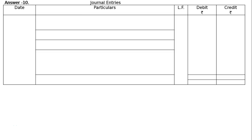Lal and Pal were partners in a firm sharing profits in the ratio of 3:7. On 1st April 2017, their firm was dissolved after transferring assets other than cash and outstanding liabilities to the realisation account. The following information is given.